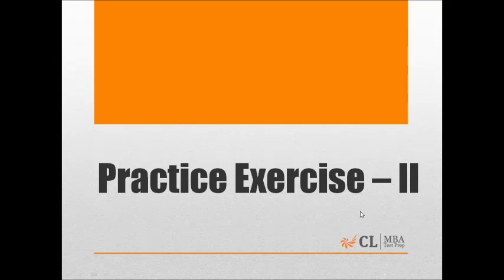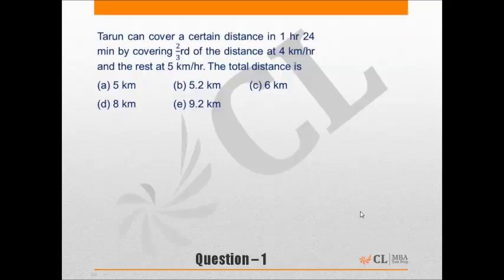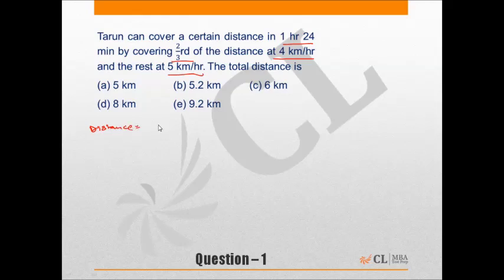Let's look at questions from the second exercise. Question 1: Tarun can cover a certain distance in 1 hour 24 minutes by covering two-thirds of the distance at 4 kilometers per hour and the rest at 5 kilometers per hour. What is the total distance? Most of us will start by saying let the distance be equal to x, which is perfectly fine but not the best approach.